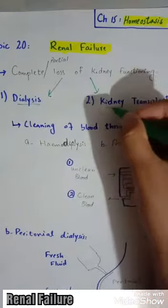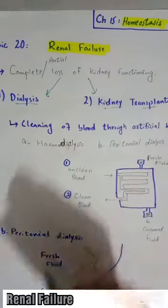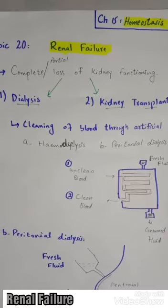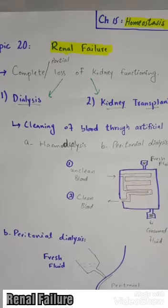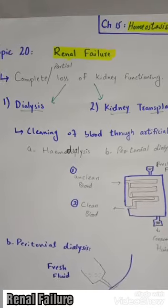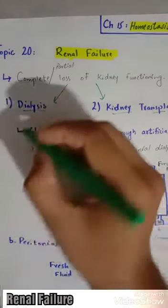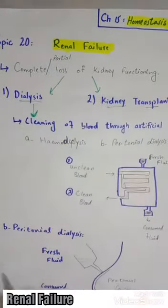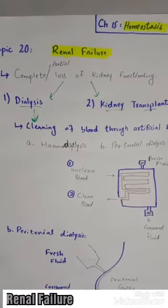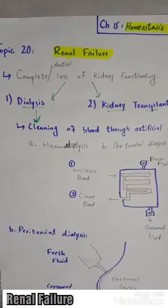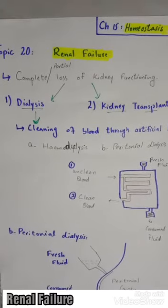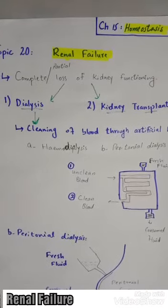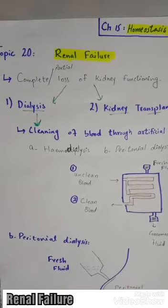In the case of renal failure, there are two cures: dialysis and kidney transplant. Dialysis is the cleaning of blood through an artificial kidney. There are two types: hemodialysis and peritoneal dialysis.